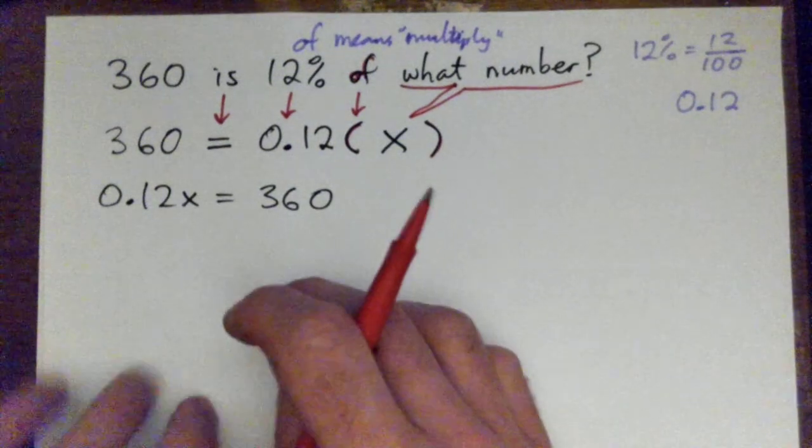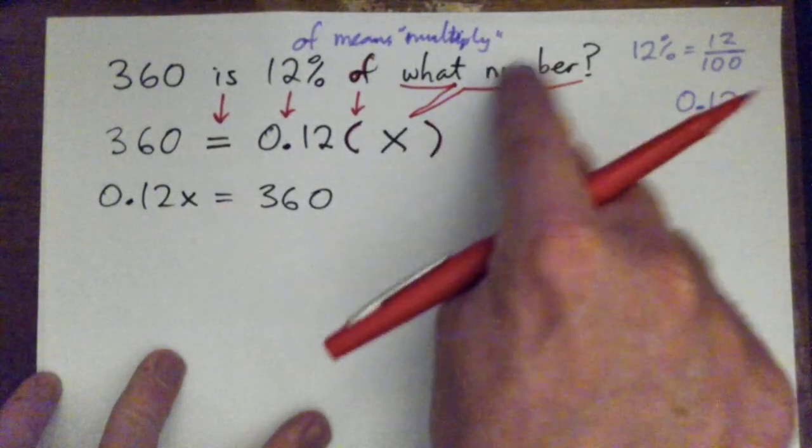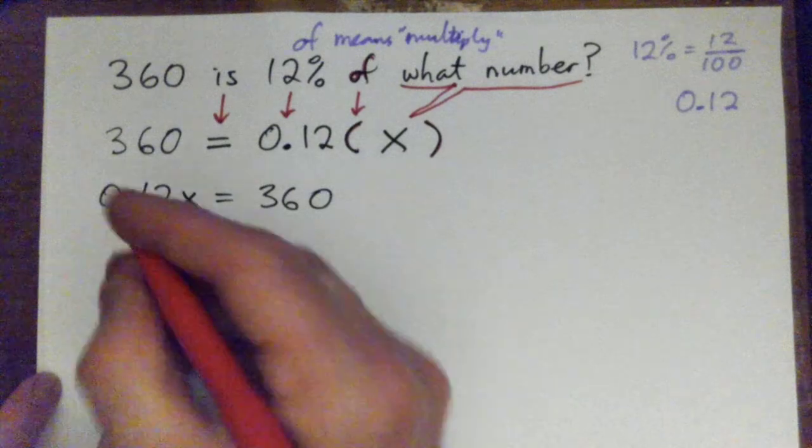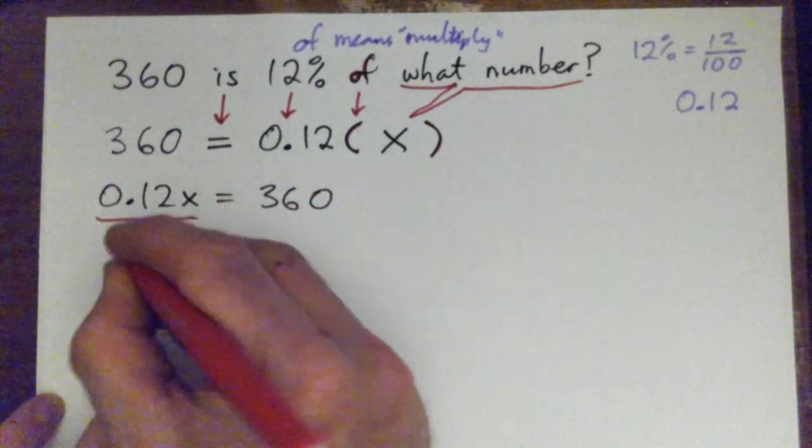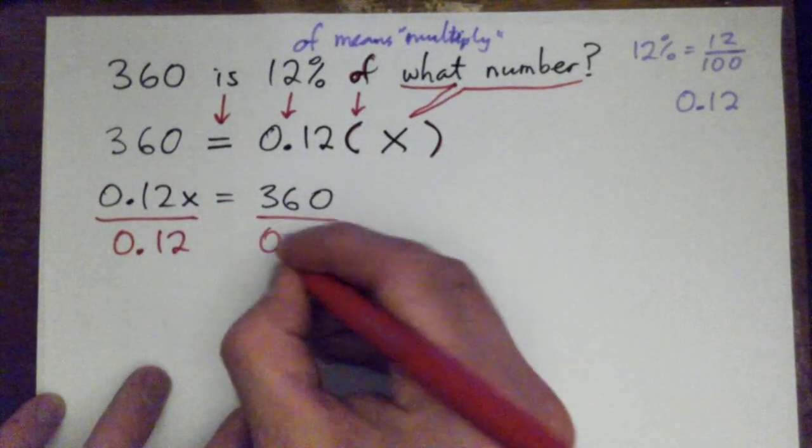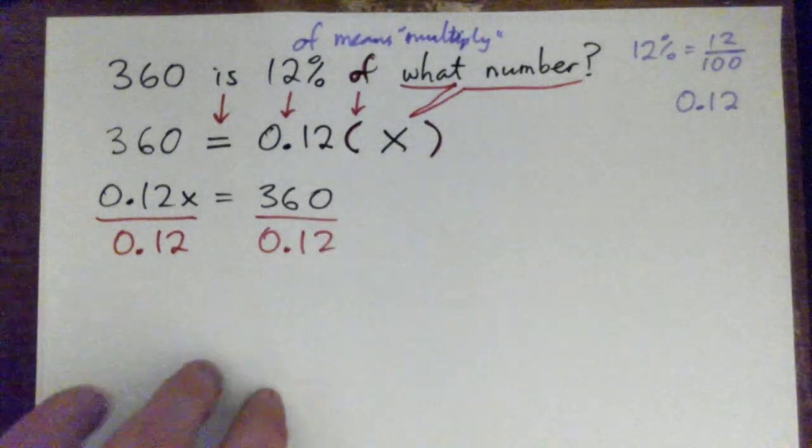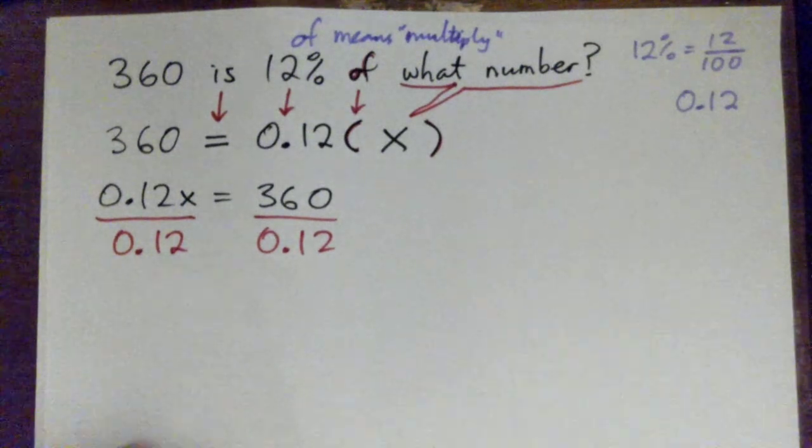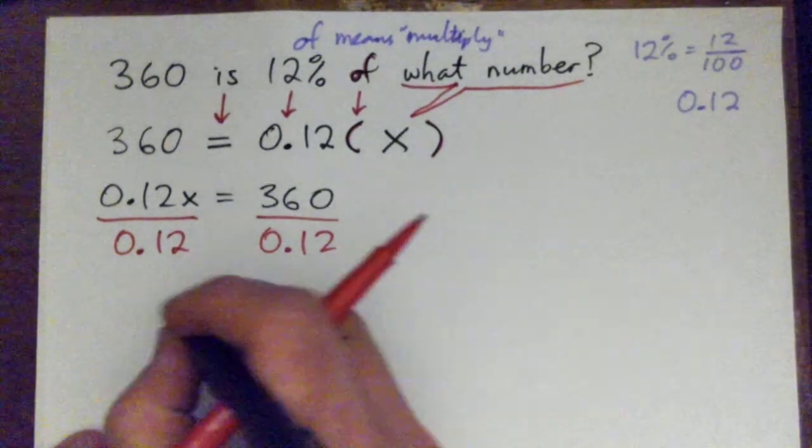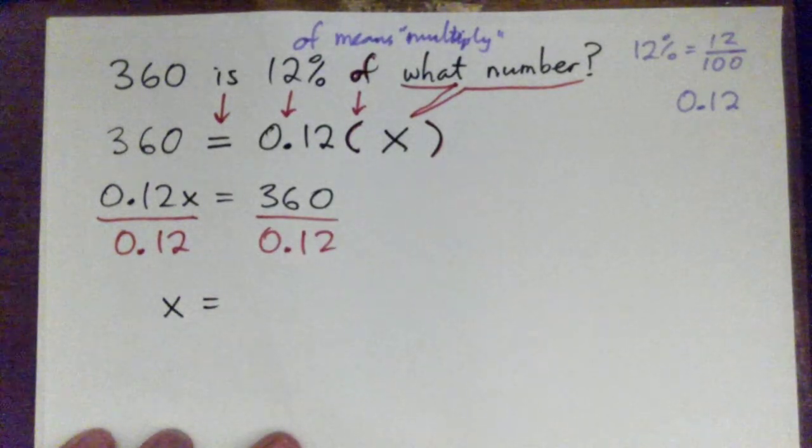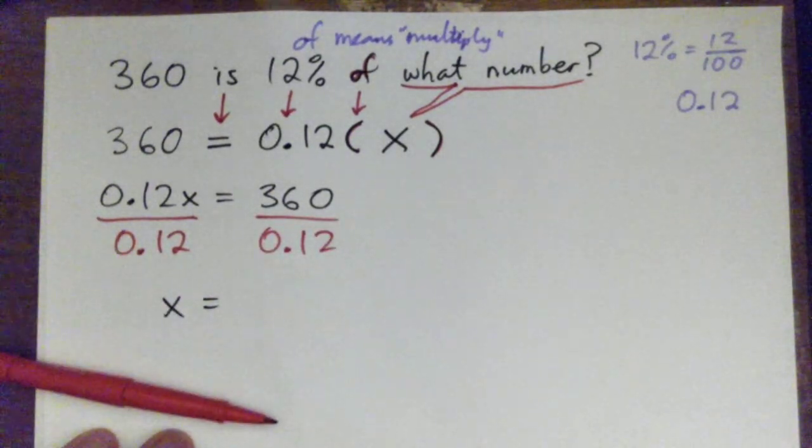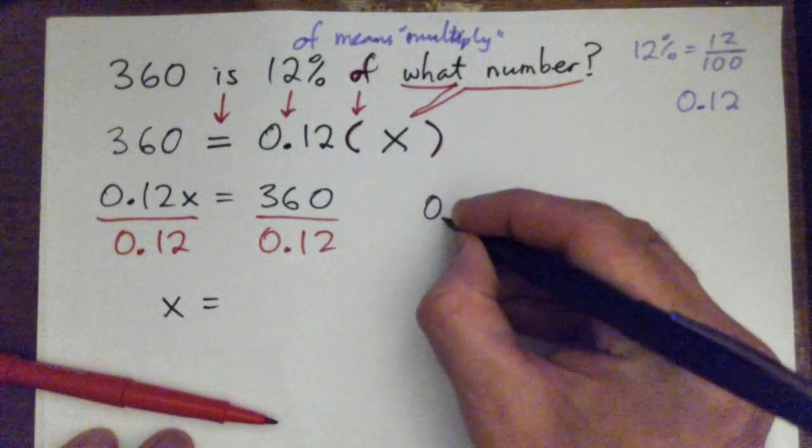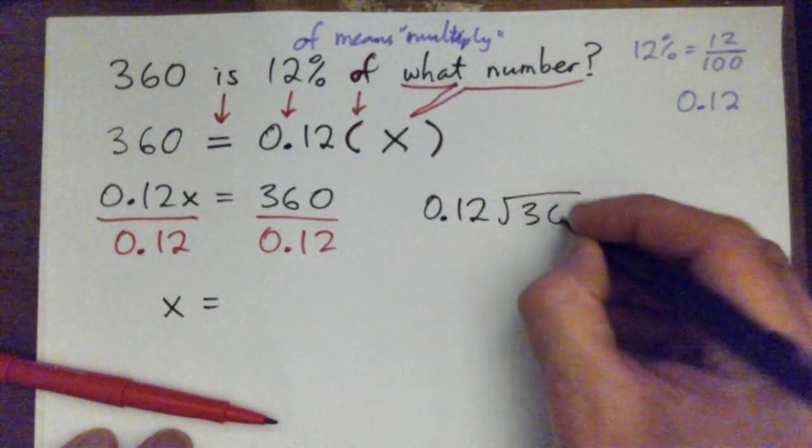And that's an equation we've got to solve for X. We've got to find the missing number, the 'what number', right? So we divide by 0.12 on both sides. And so basically it's X equals 360 over 0.12, right? So we've got to divide a decimal, 0.12 into 360.